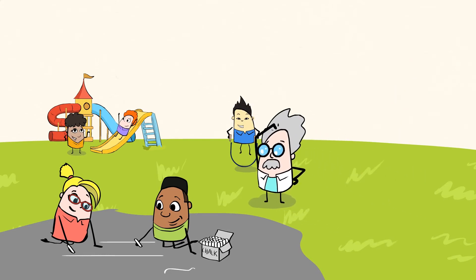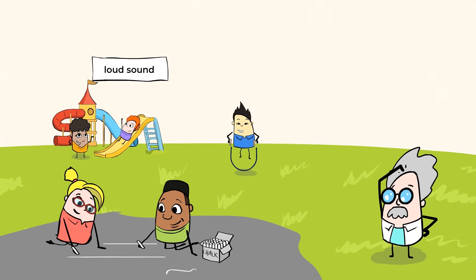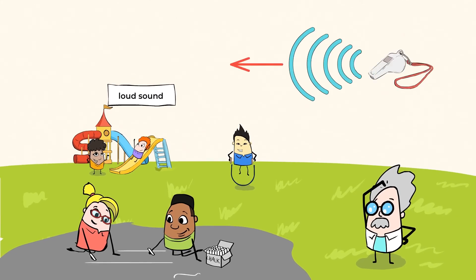They could walk around and tell each student that recess is over, but that would take a very long time. They will need to communicate with all of the students at once. They could use a loud sound to do this. A whistle is a great way to communicate with people who are not close to you. The sound travels a long distance, much further than our voices.